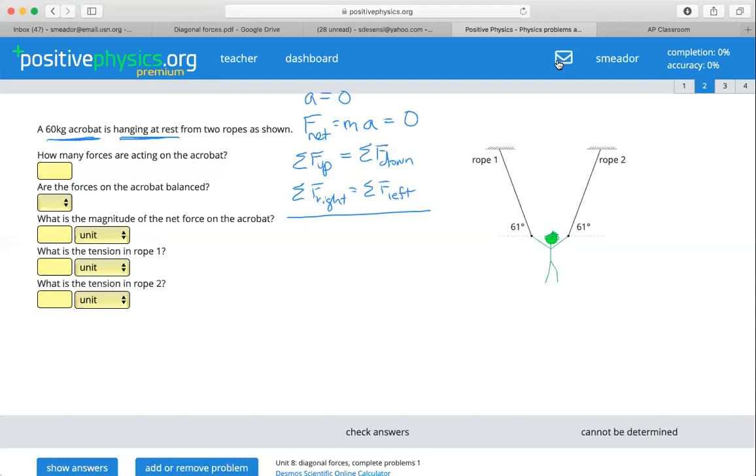How many forces are acting on the acrobat? Well, we always have our force of weight pulling it toward the earth, force mg, which we can calculate from our 60 kilograms that it gave us earlier. So it's 60 kilograms times gravity, which is 600 newtons. And that's pulling it down toward earth, but we have these two ropes with tension forces that are pulling it up away from earth. So we have one, two, three forces acting on our acrobat.